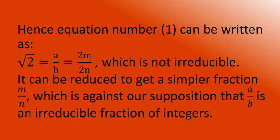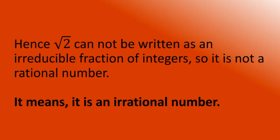Hence, equation number 1 can be written as √2 = a/b = 2m/2n, which is not irreducible. It can be reduced to the simpler fraction m/n, which is against our supposition that a/b is an irreducible fraction of integers. Therefore, √2 cannot be written as an irreducible fraction of integers, so it is not a rational number — it is an irrational number.